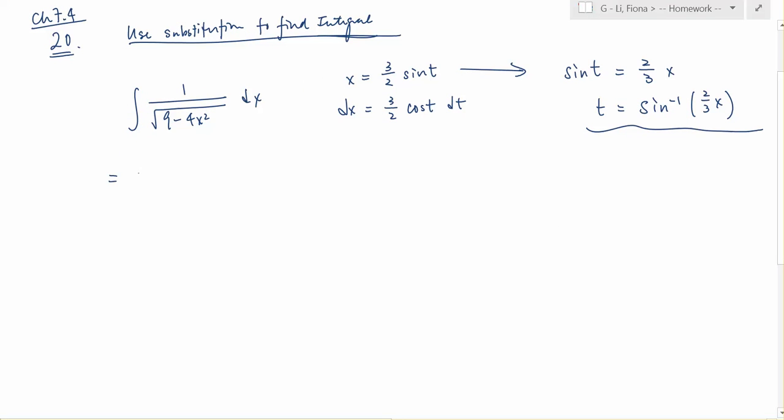Okay, so let's substitute what we're given for x, and our second step will be the integral of 1 over 9 minus 4 times what we got right here, which is 3 over 2 sine t squared. Let's make this longer. And instead of writing dx, we will be writing this chunk. So it'll be 3 over 2 cosine t dt.